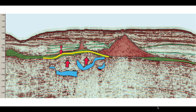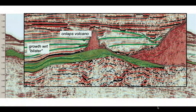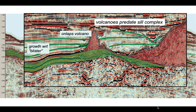Looking to the side of the blister fold, the strata above the green reflector show growth, indicating the fold developed gradually and was buried by deposits characterized by a high-frequency seismic signature above. Critically, those same reflectors onlap and bank onto the volcanic cones. Zooming in, the reflectors showing growth of the blister fold — the surface manifestation of the sills at depth — are clearly onlapping the volcanic cones.